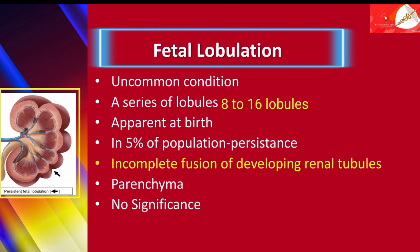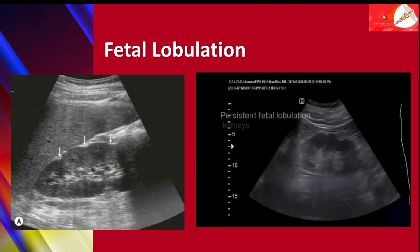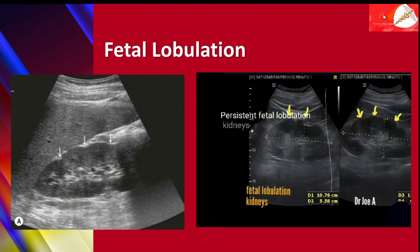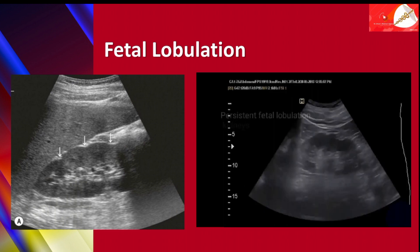Characteristically, in persistent fetal lobulation, the parenchyma is of normal thickness. Fetal lobulation is of no clinical significance. In this ultrasound, you can see characteristic indentations on the outer surface of the cortex, giving a shape of lobules.